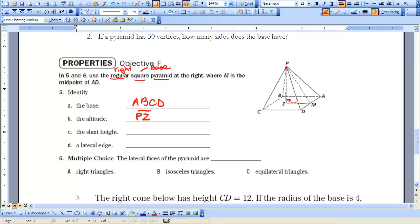Our slant height is from the apex along the lateral face, so that's the altitude of that lateral face, which would be PM.